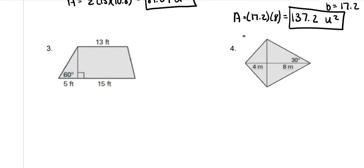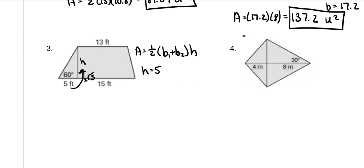Now we have a trapezoid. The formula is half the two bases added together times the height. We have our two bases, but we don't have the height. This is a special right triangle, so to go from here to here, we just multiply times the square root of 3, which means our height is 5 square roots of 3. You could have also done trig: the tangent of 60 equals H over 5, which would have given a rounded answer of 8.7.